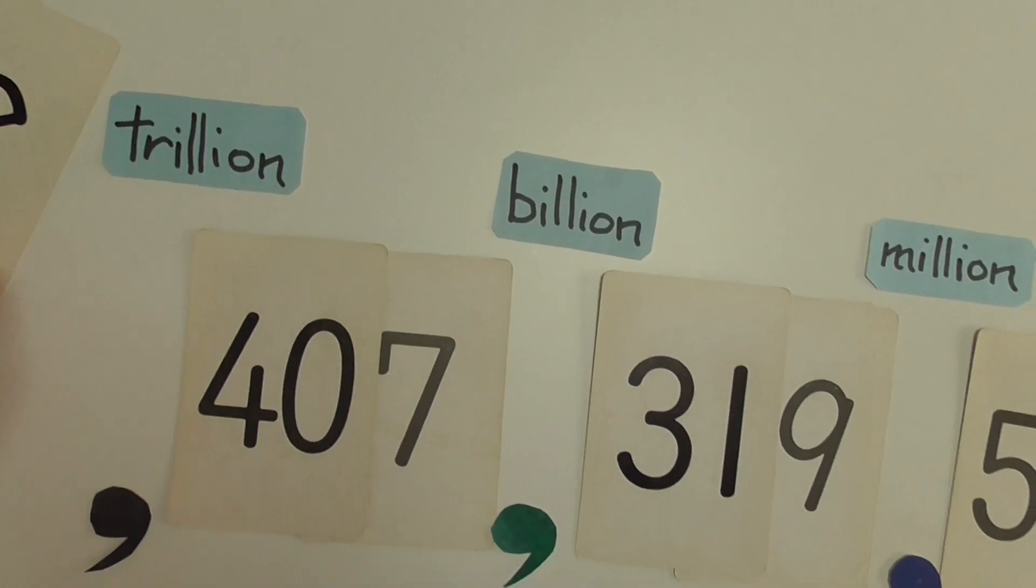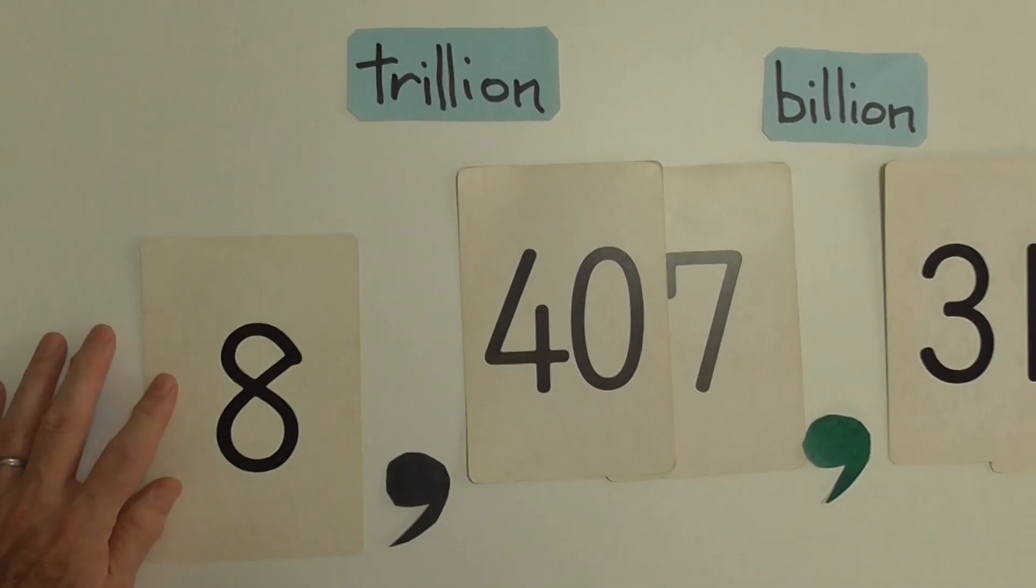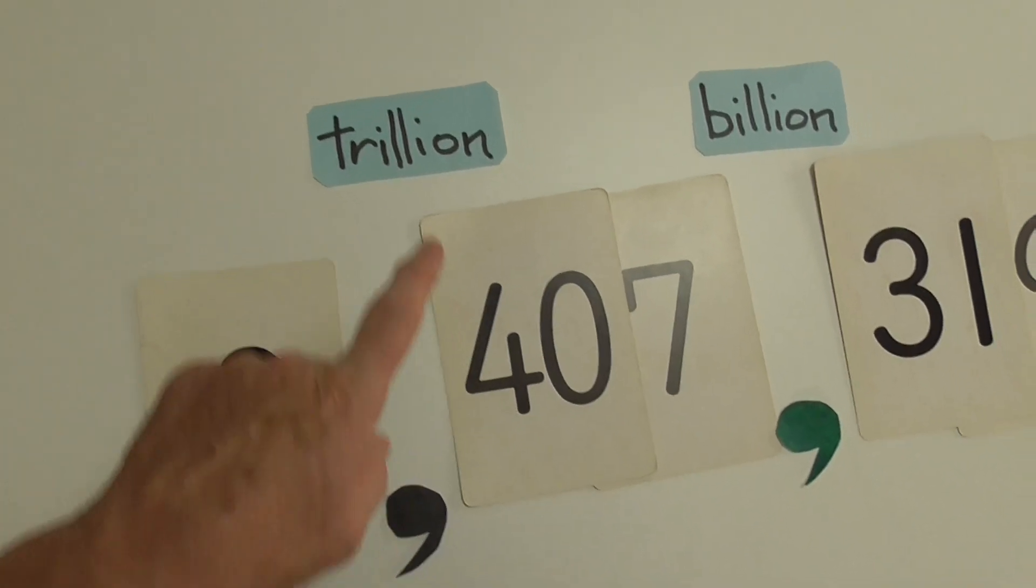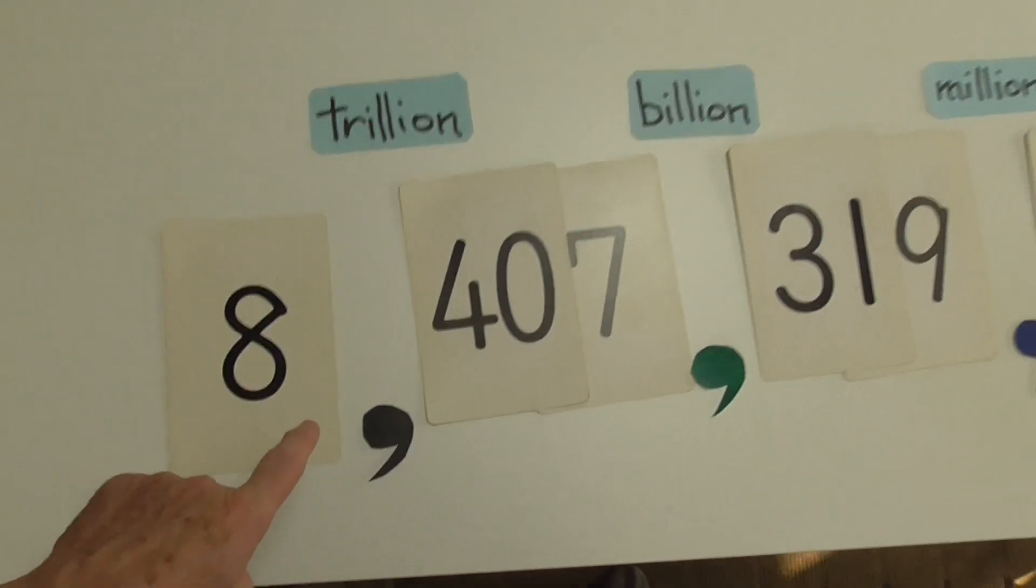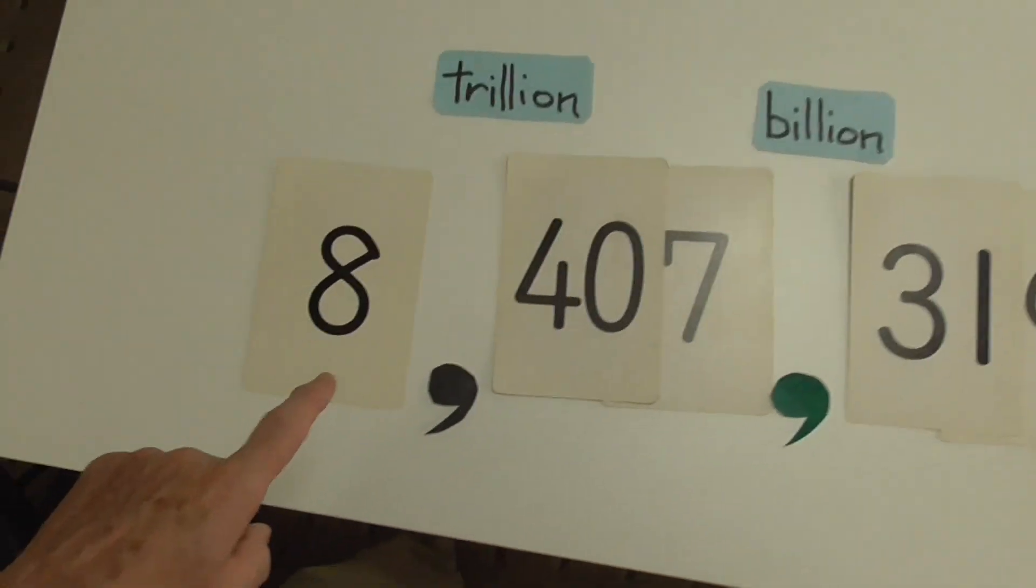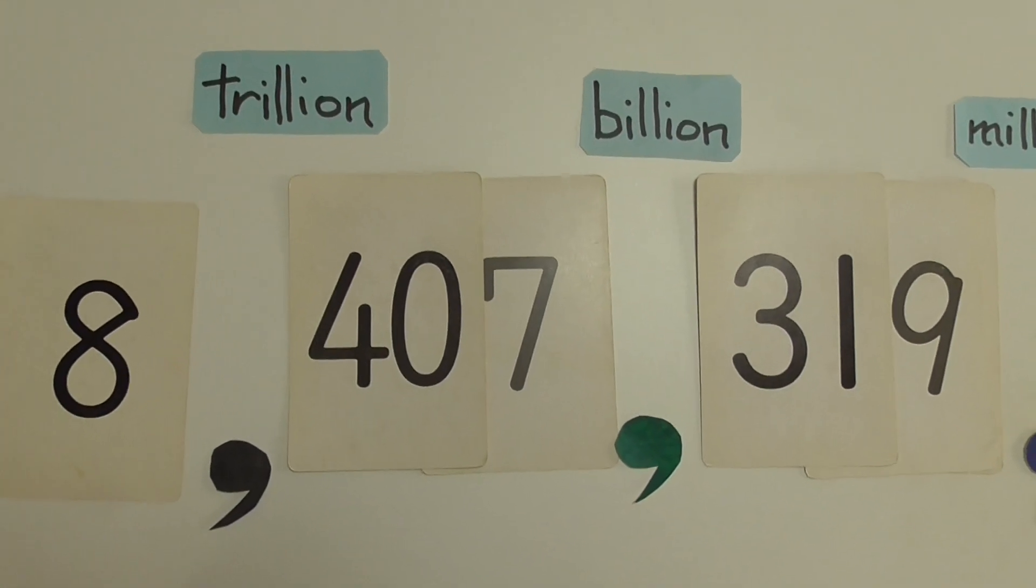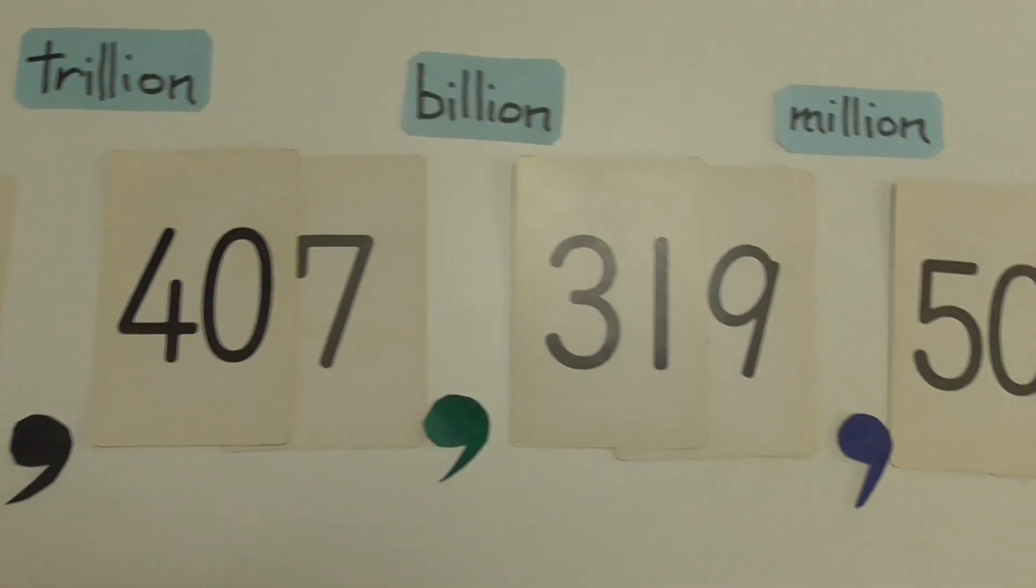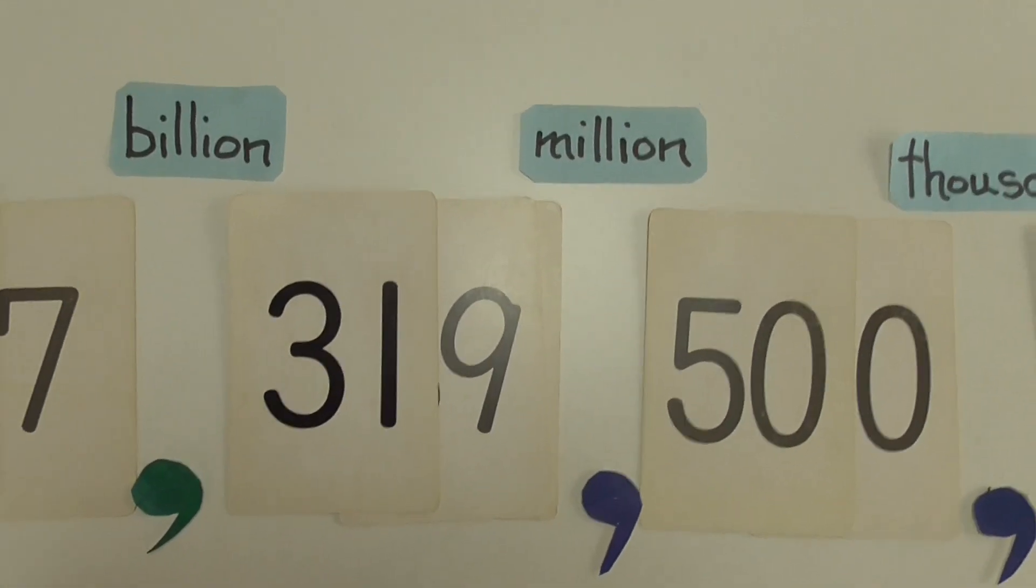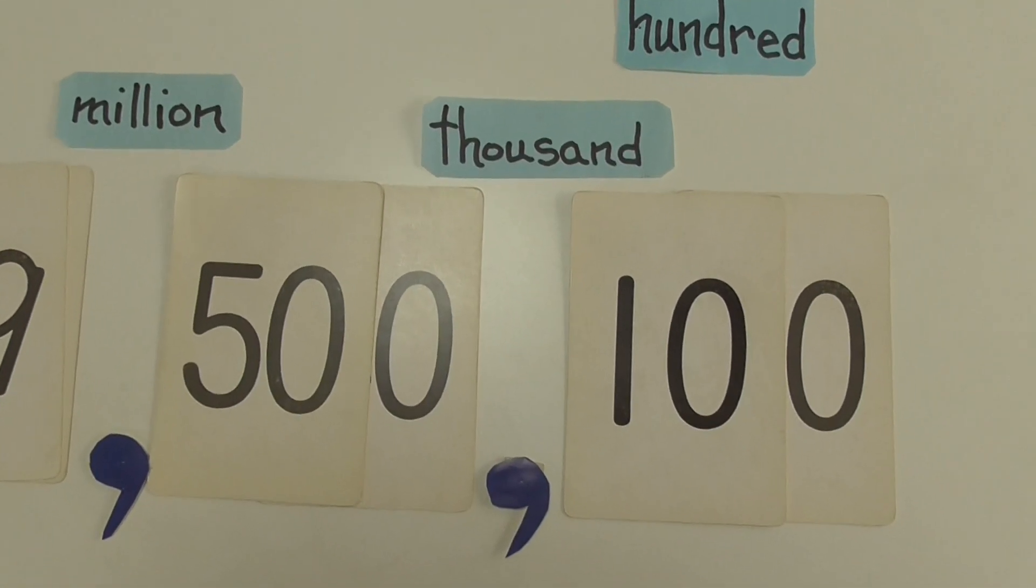So to put a big eight, these cards are getting in the way here. Eight trillion. Trillion. One, two, three, four. Eight trillion. 407 billion. 319,000,000. 500,100.